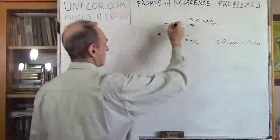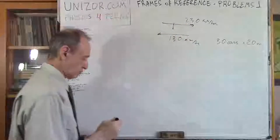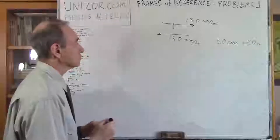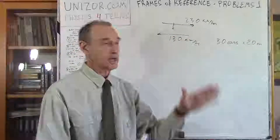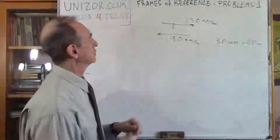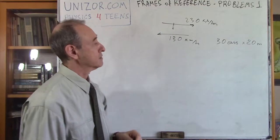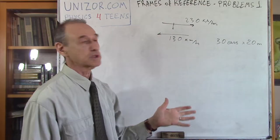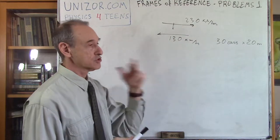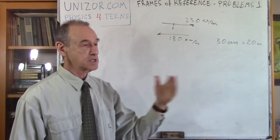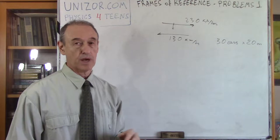In this train there is a passenger who is looking perpendicularly to the track. The track is considered to be a straight line, and the two tracks are parallel to each other. The question is: how long will it take for this passenger to see the train passing by?